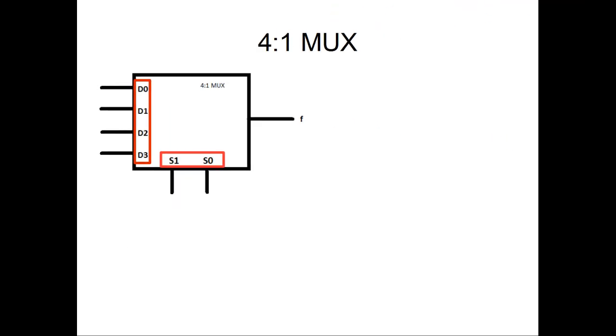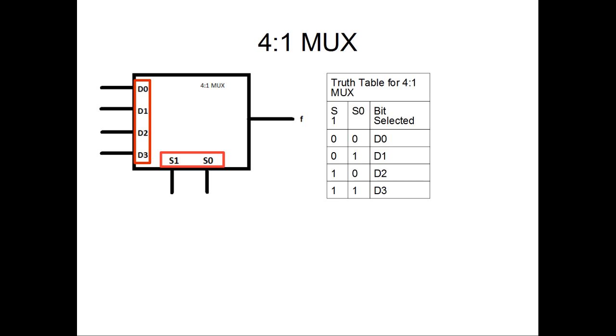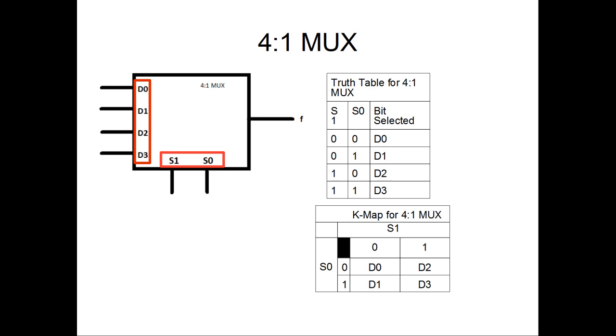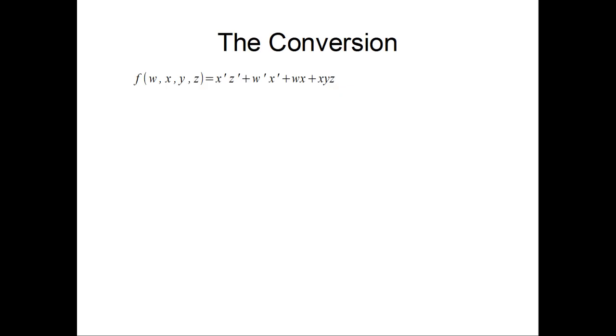The following is a truth table for the 4 to 1 MUX. This table can be directly translated into a K-map, and both the equivalent sum of product and product of sum expressions can be derived. In this video, I will be showing how a boolean expression can be implemented using only a single multiplexer. Let's say we have a boolean function of four variables: f is equal to x'z' plus w'x plus wx plus xyz.